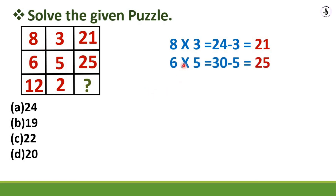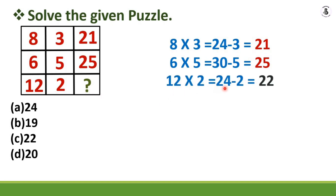Applying the same pattern to the second row: 6 multiplied by 5 equals 30, and 30 minus 5 equals 25 — which satisfies the second row. For the third row: 12 multiplied by 2 equals 24, and 24 minus 2 equals 22. So the final answer is 22 — option C.